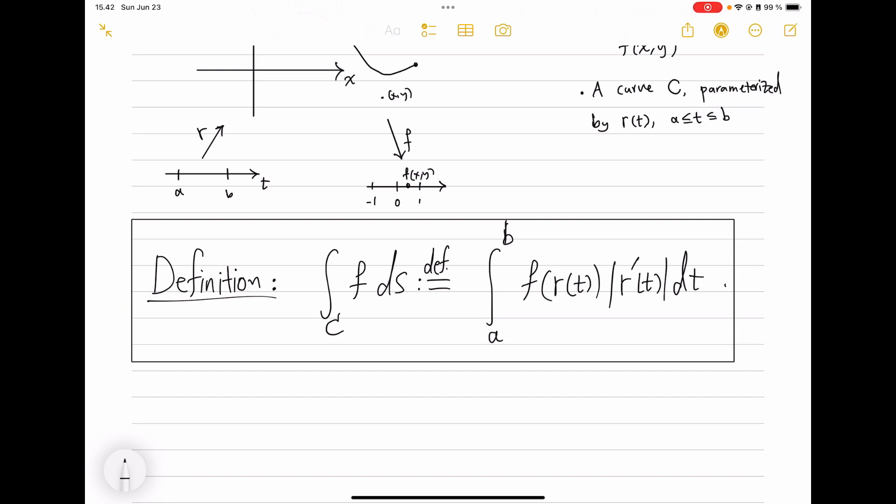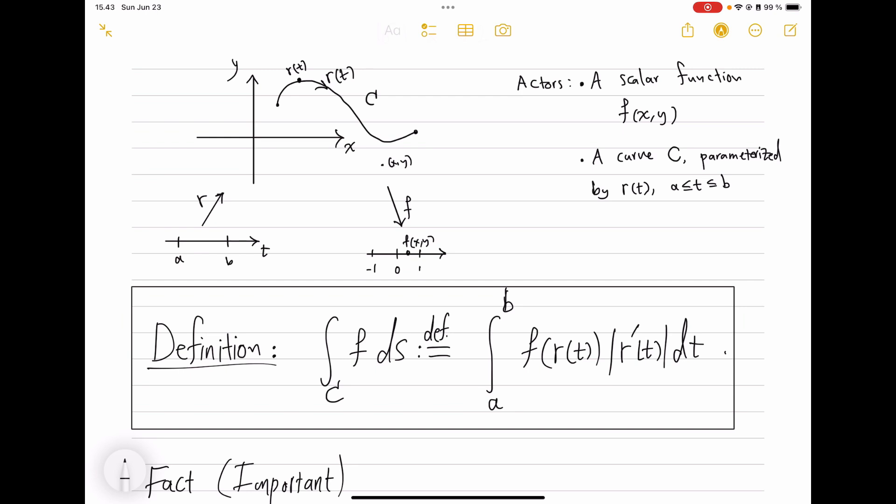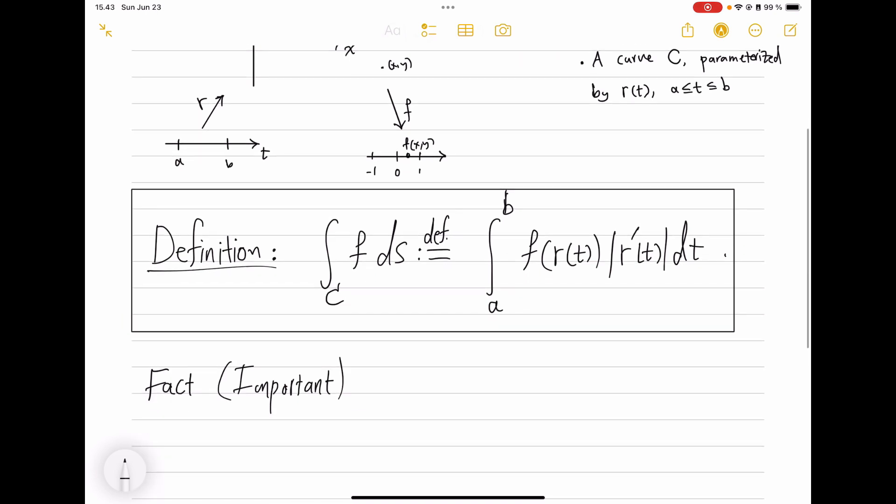So that's it. There is no other meaning behind that symbol on the left than this thing. The reason we need this r'(t), among other reasons, is that this makes it independent of parameterization. A very important fact is that this is quite an intrinsic object—it really depends on the curve and not how you really travel along it.